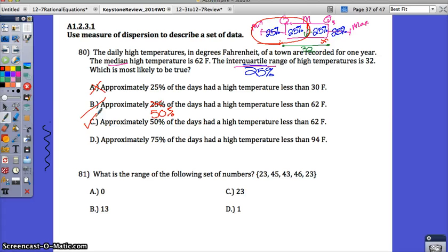Remember that quartiles break the data set into quarters. So a fourth or 25% of the data set is in each quarter.